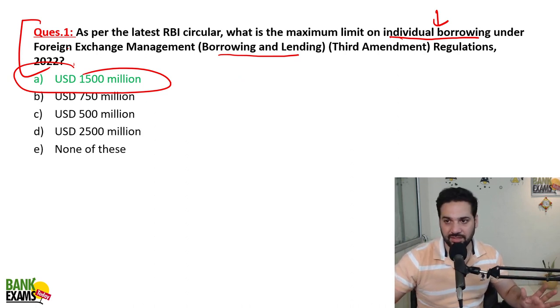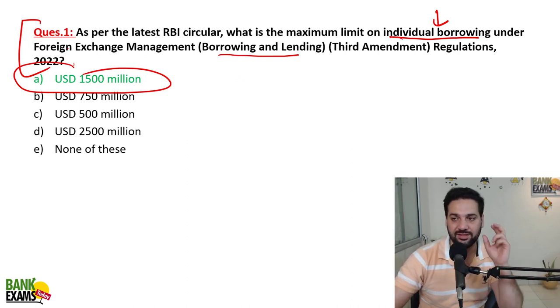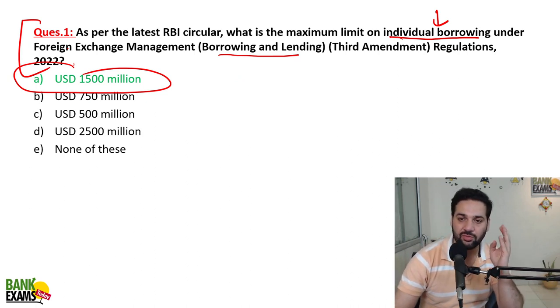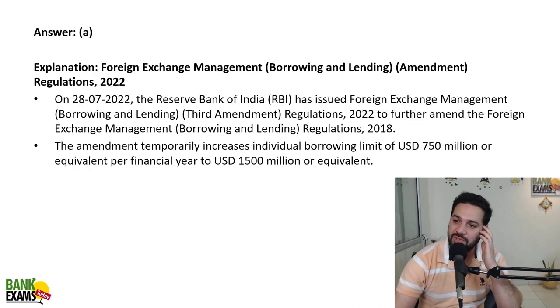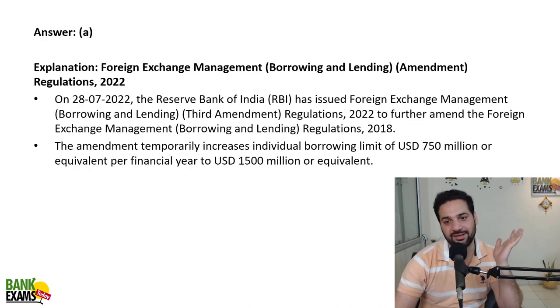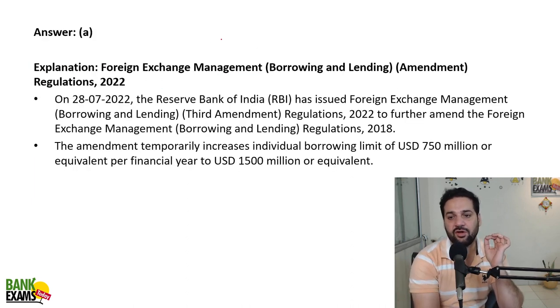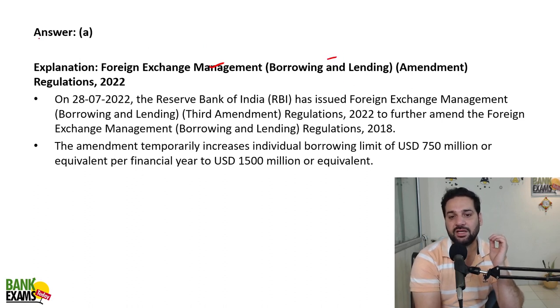Keep this in mind carefully. The maximum limit — the quota — is 1500 million. Previously it was 750 million. This is under the Foreign Exchange Management Borrowing and Lending Amendment Regulation 2022.